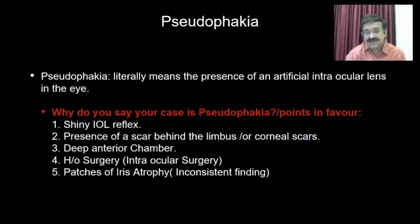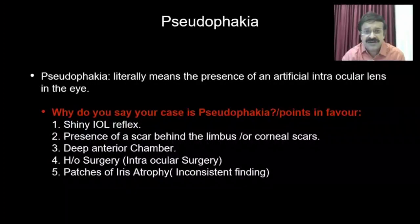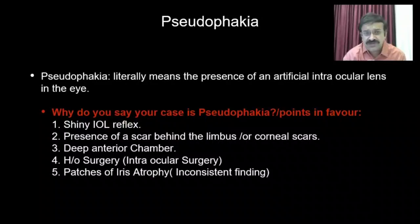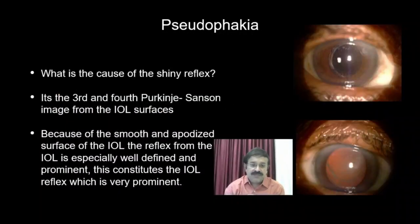Another finding is that the patient will give you a history of ocular surgery, and there might be patches of iris atrophy. This is an inconsistent finding these days because surgeons are now very adept and hardly leave any mark on the iris — this only occurs when you inadvertently touch or injure the iris during surgery. In older patients or those who had surgery long ago, you might find this as an additional finding.